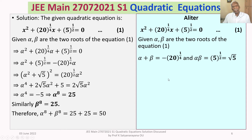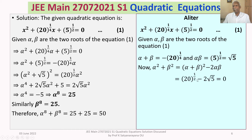From alpha plus beta, we try to get alpha squared plus beta squared using the formula: alpha squared plus beta squared equals alpha plus beta whole squared minus 2 times alpha beta. Now, alpha plus beta whole squared is 20 to the power of 1 by 4 whole squared, which is 20 to the power of 1 by 2, minus 2 alpha beta, which is 2 times root 5. This equals 0, because 20 to the power of 1 by 2 is 2 root 5, so 2 root 5 minus 2 root 5 equals 0.